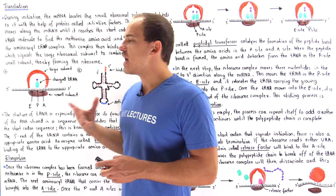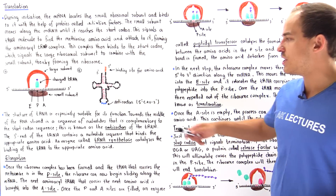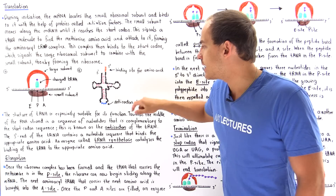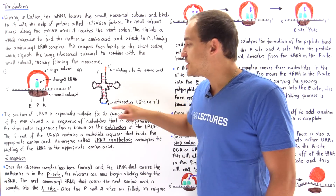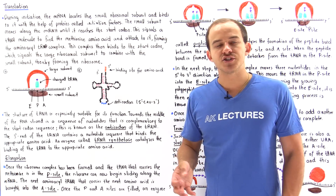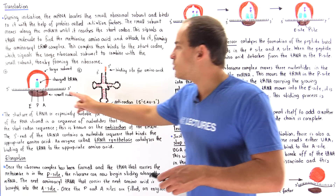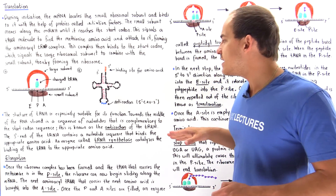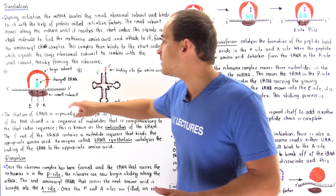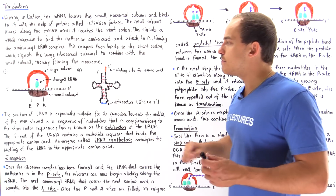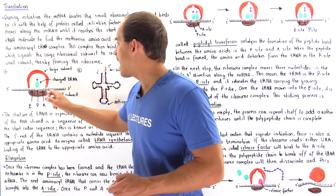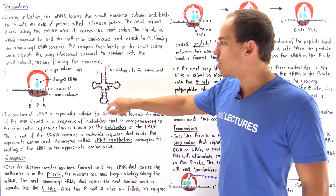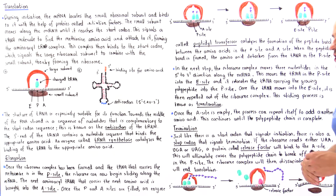Another important region on our tRNA molecule is the region at the center of our tRNA strand, shown in blue. This region is basically a sequence of three RNA nucleotides that is complementary to the sequence on the codon, and that is exactly why this region is known as the anticodon. The anticodon is the region that binds to the codon on our mRNA molecule, at the bottom of the tRNA molecule.